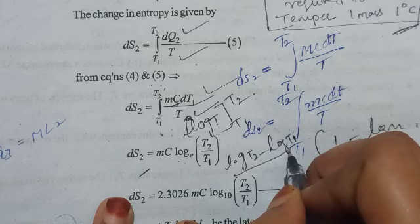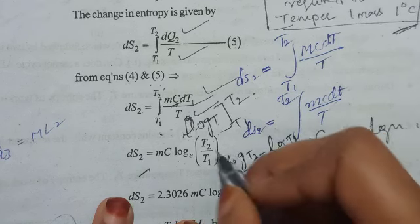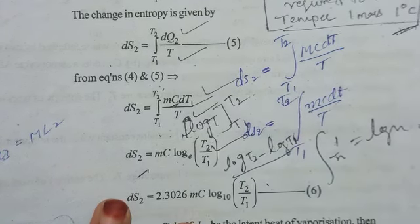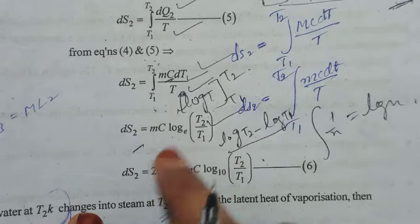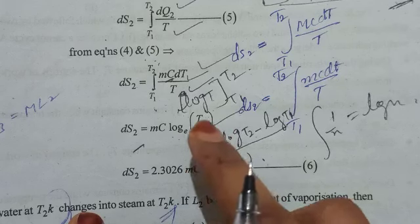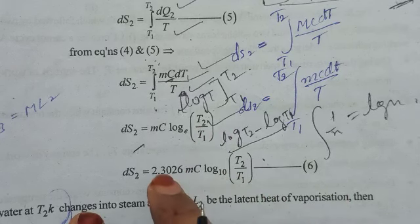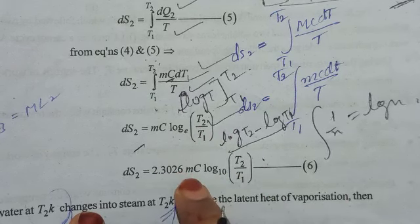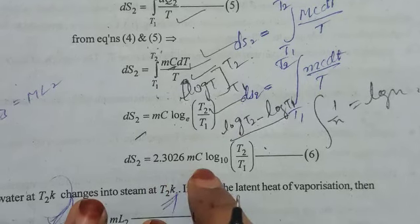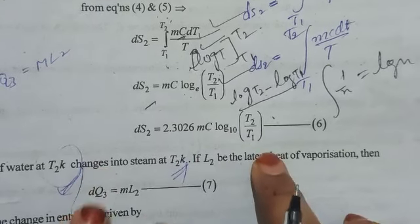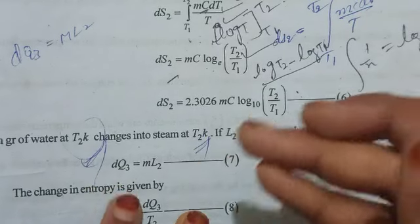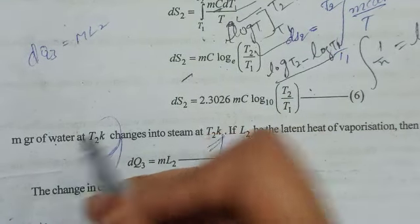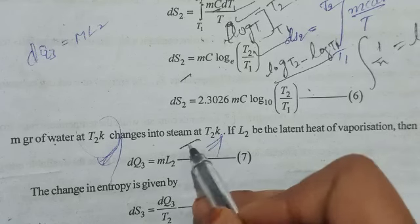Therefore, dS2 equals mC log T2 by T1. To convert from log base e to log base 10, we multiply by 2.3026. So dS2 equals 2.3026 mC log10(T2/T1). This is the second change in entropy.